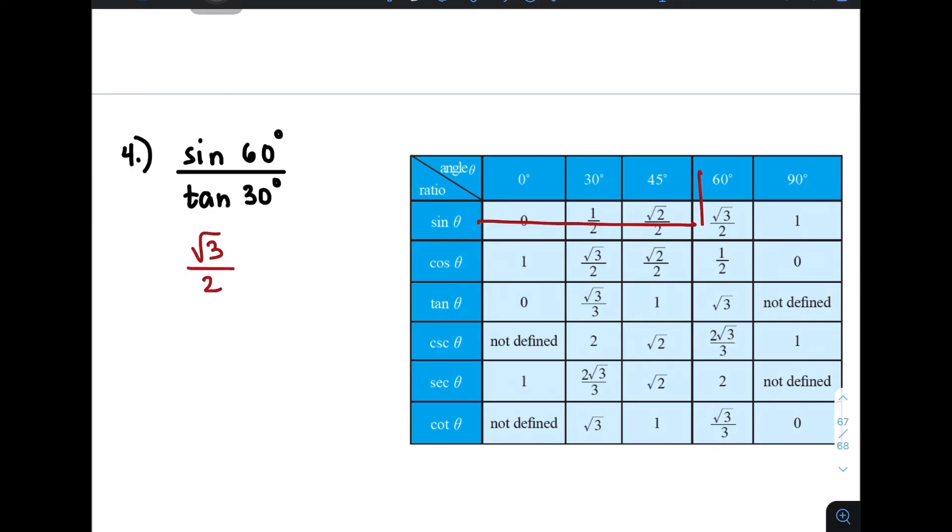Square root of 3 over 2. Again, square root of 3 over 2, it came from the value of this. And then over, because we have a fractional bar, over tangent 30 degrees. So we have tangent 30 degrees, this is it. Its value is square root of 3 over 3.